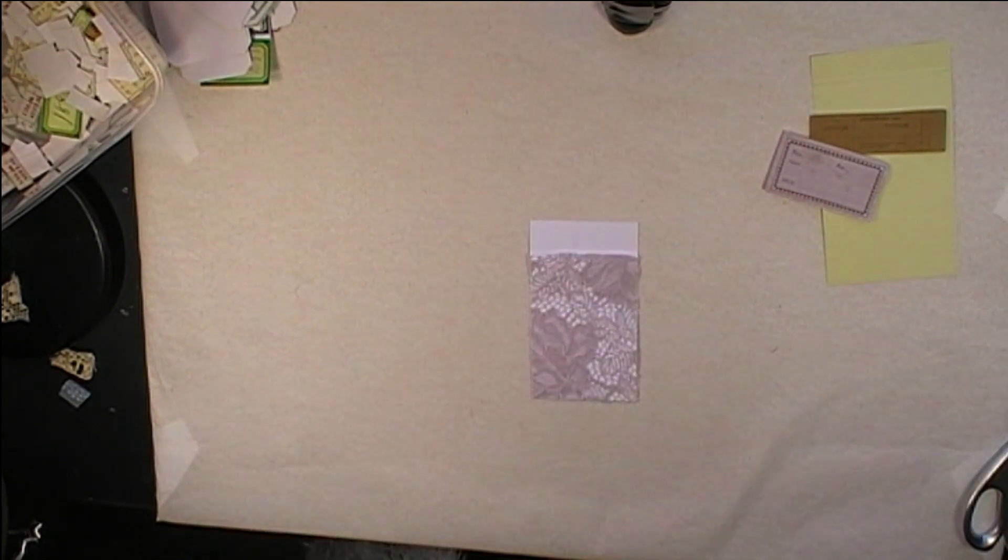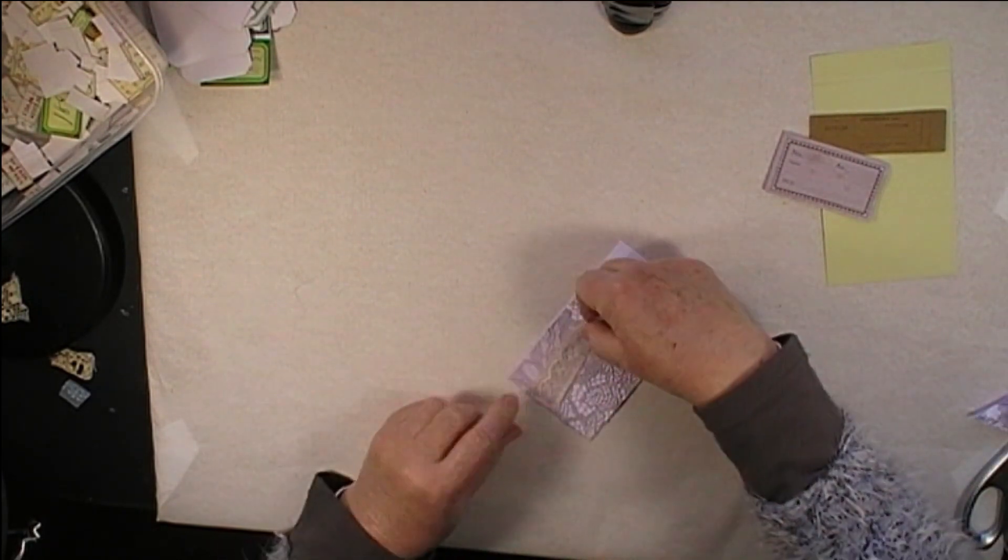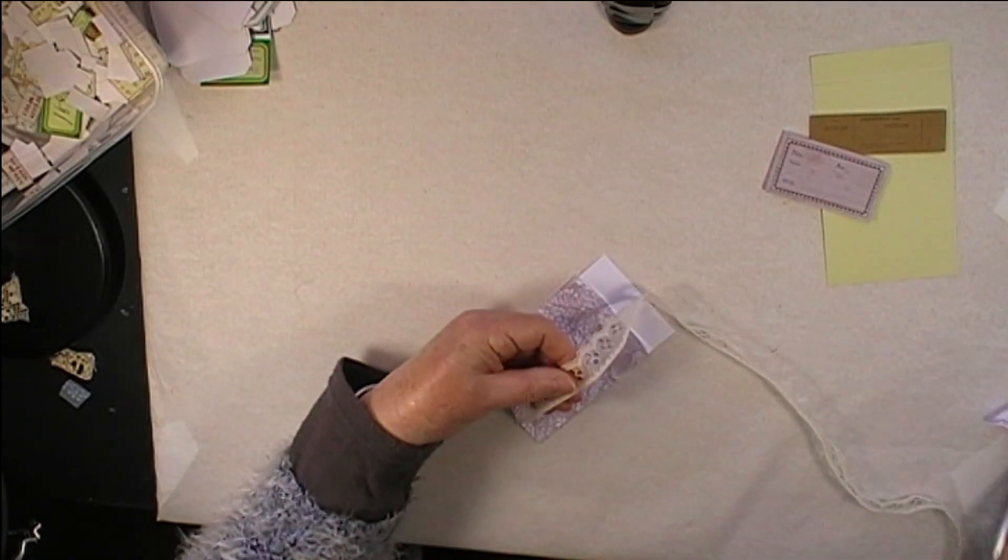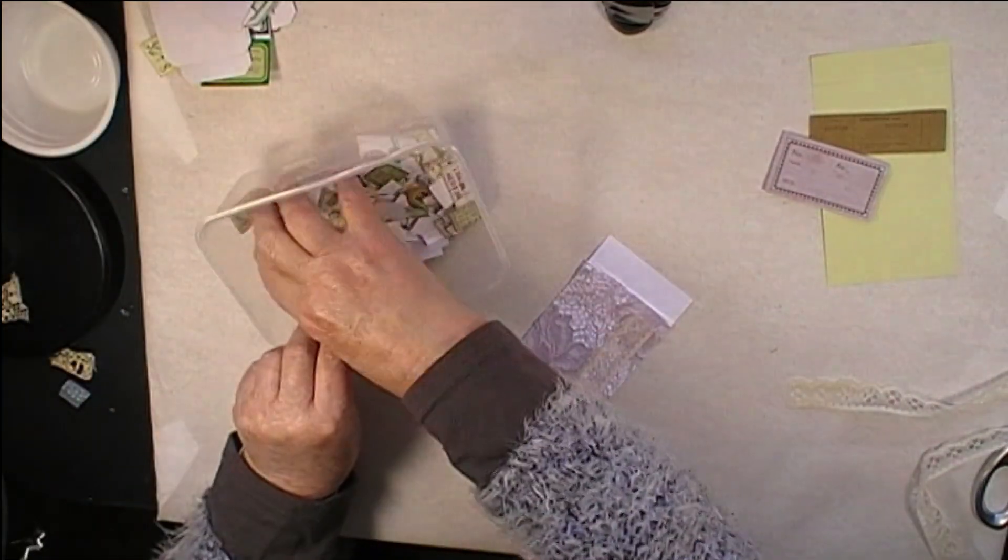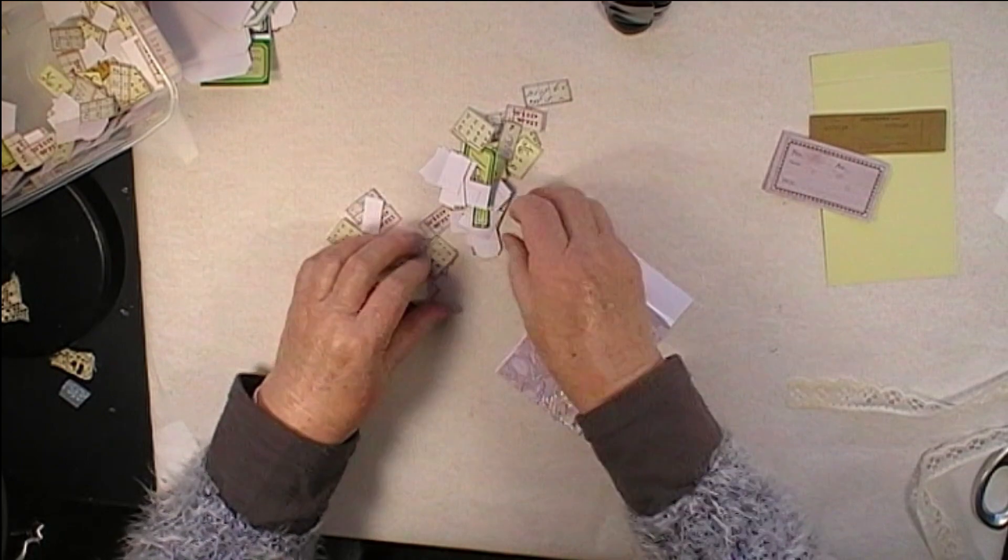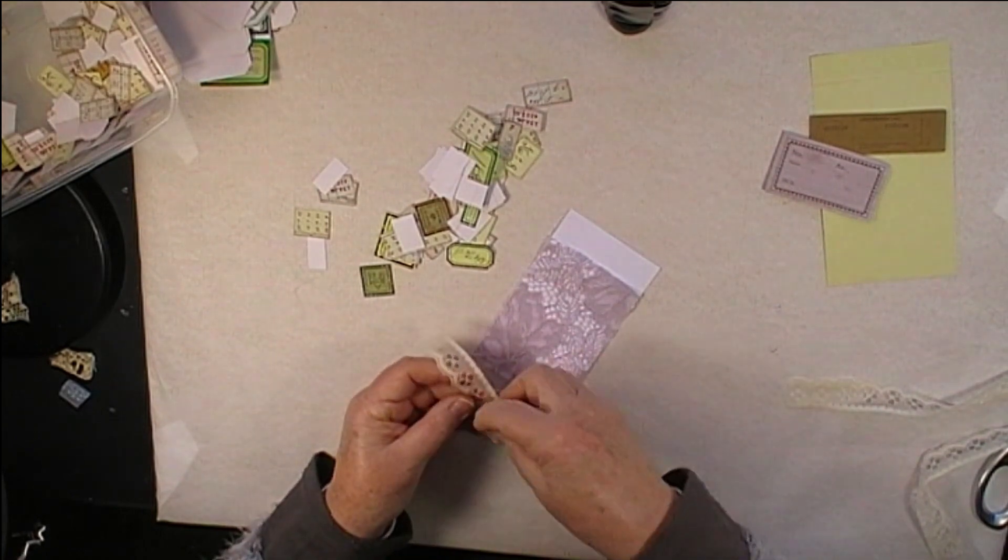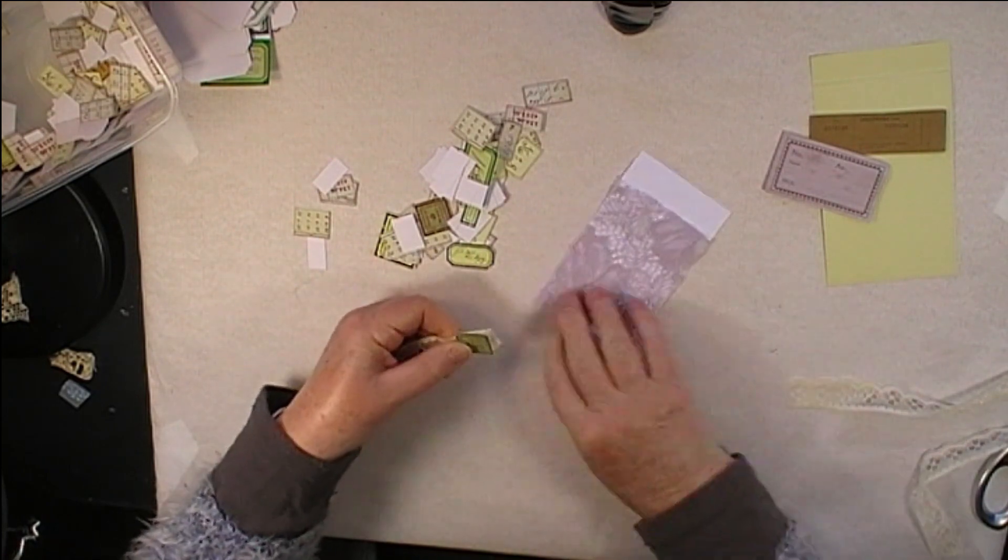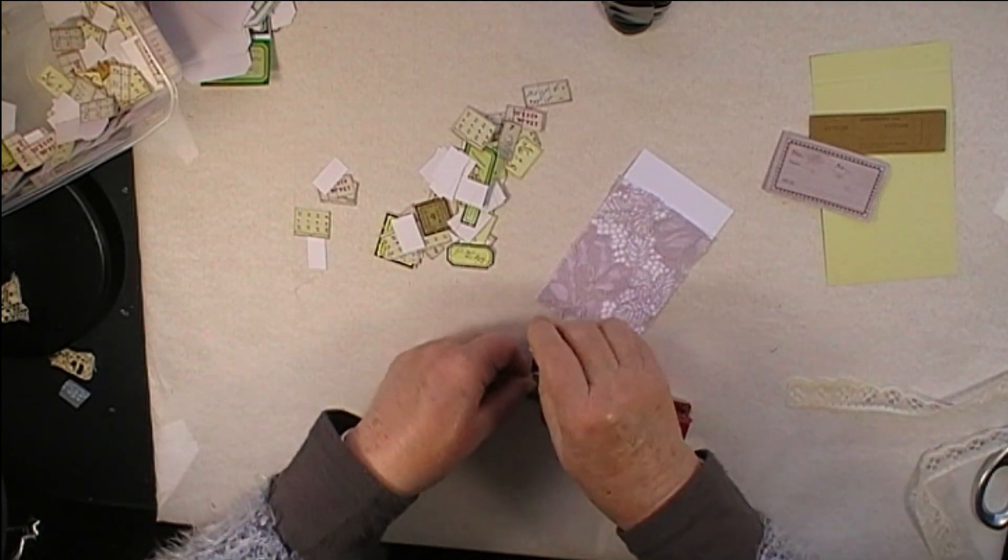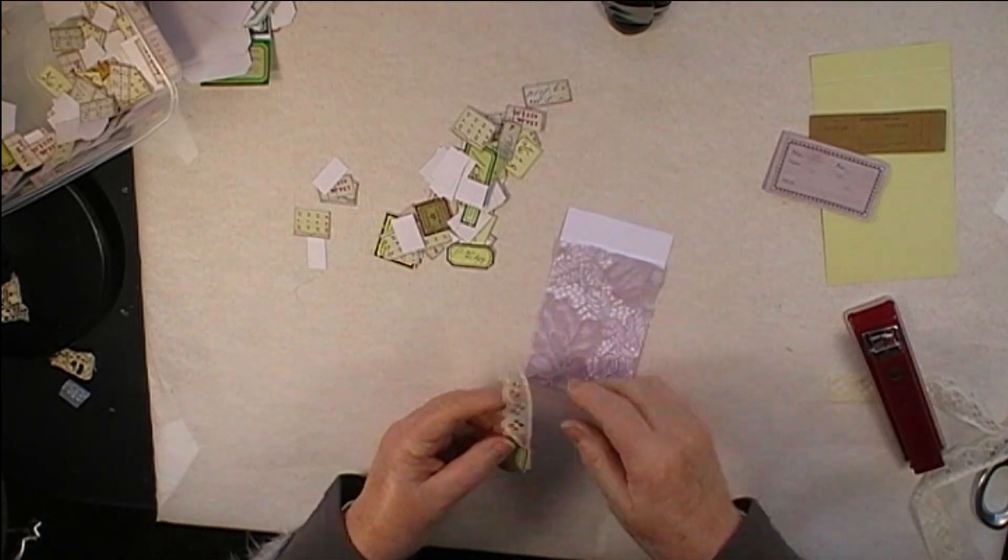Okay, now we're going to need some other colors. I want something that's going to show up, so I might use a little piece of the cream. And here I've got some little labels. I'm just going to pick a couple of them and attach them with a stapler. Okay, that's one bit done.